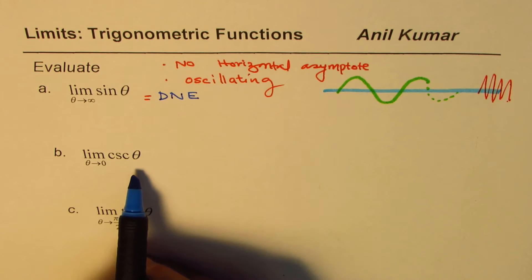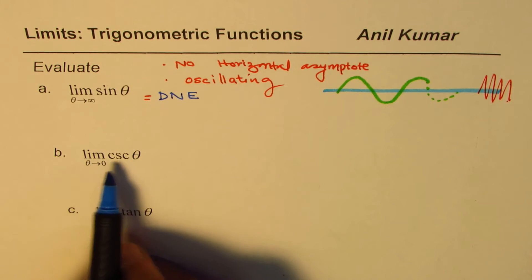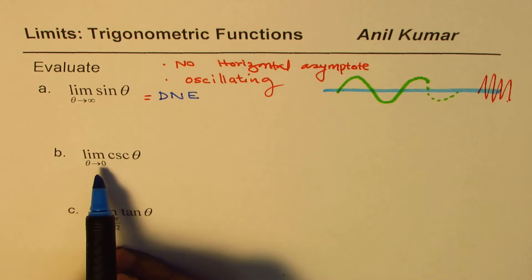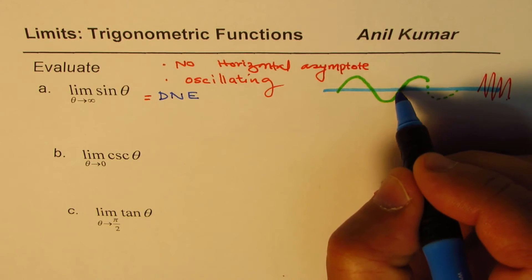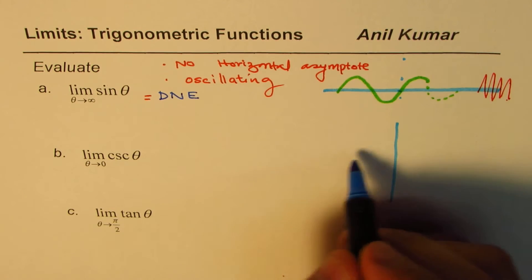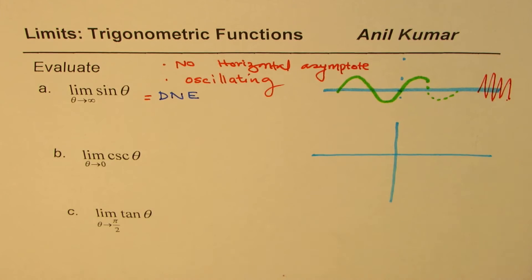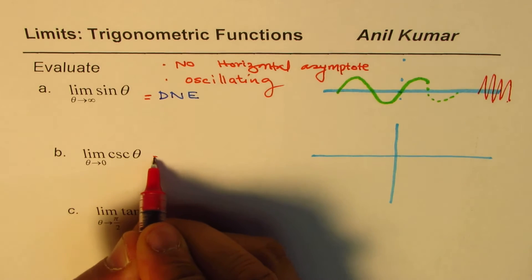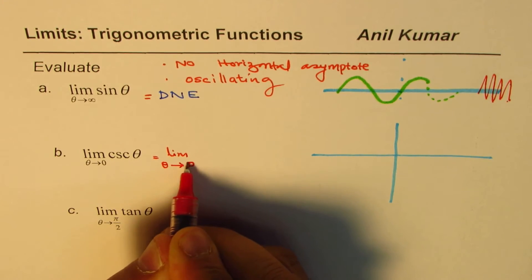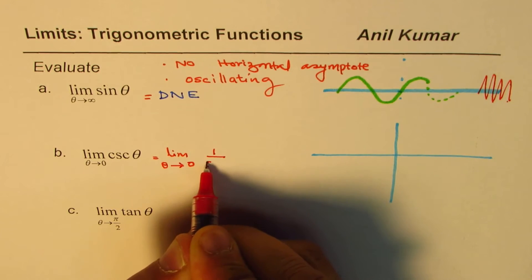Now let's look into the second question, which is the limit of cosecant theta — the reciprocal of sine theta — when theta approaches 0. Let me sketch the cosecant theta graph. That means it equals the limit when theta approaches 0 for 1 over sine theta.